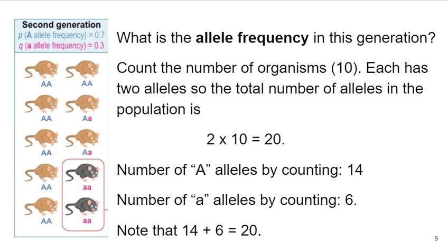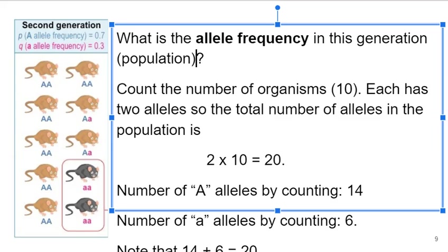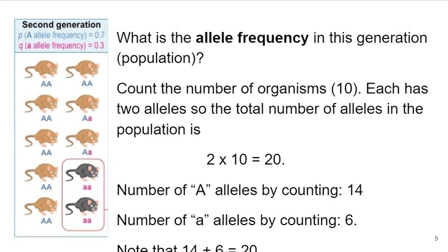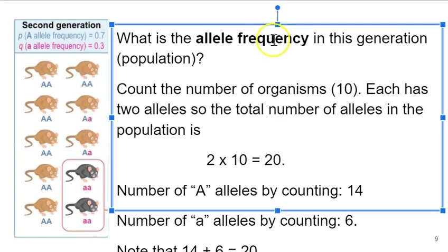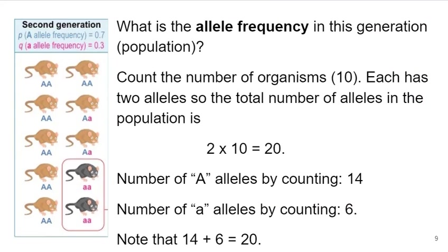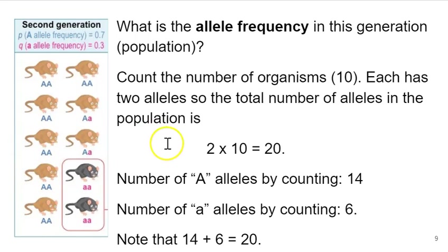What I really want to focus on is: how do you know what the allele frequency in this population is? We're going to count the total number of organisms — it's 10. We remember that these are diploid organisms, so each one has two alleles for the A gene. This is not a sex-linked gene. So we can count the total number of alleles in this population of 10 mice: two alleles per organism times 10 organisms equals 20 total alleles. That becomes our denominator for determining allele frequency.